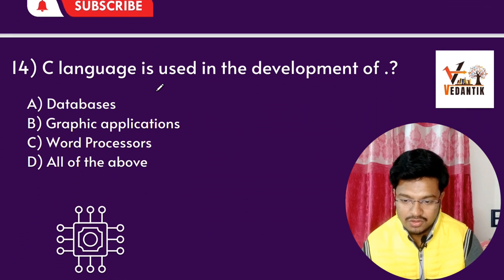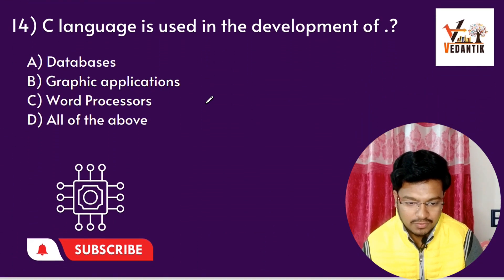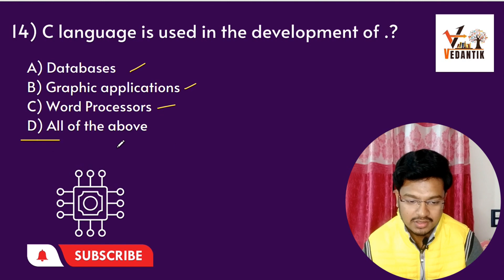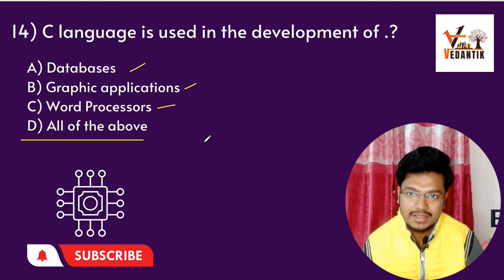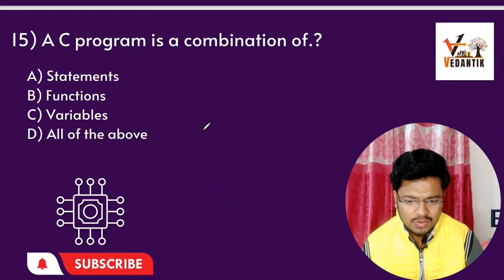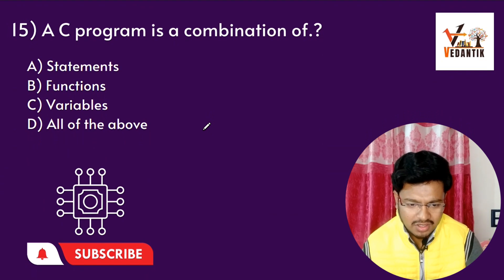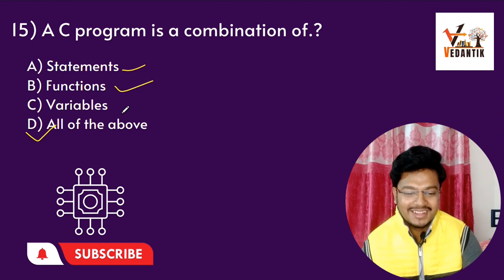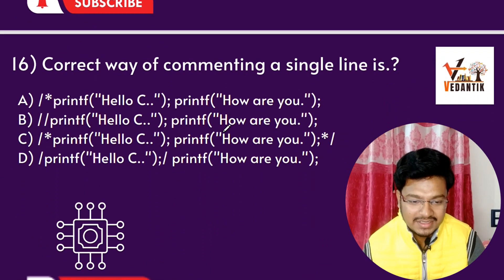Question 11: C language is used to develop what? Options are: database, graphic application, word processor. The answer is all of these. C language is a combination of statements, functions, and variables.